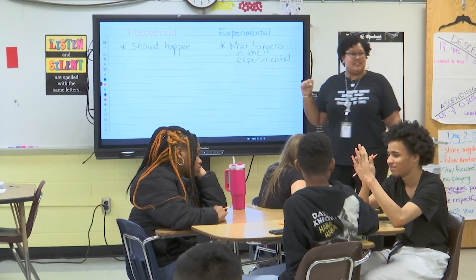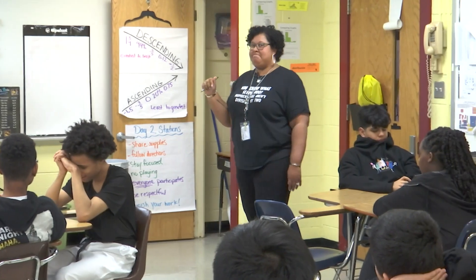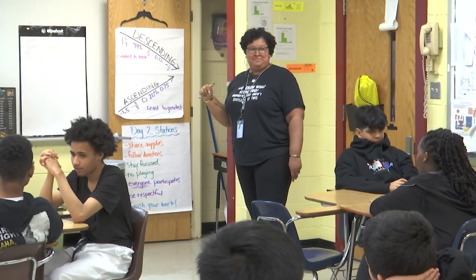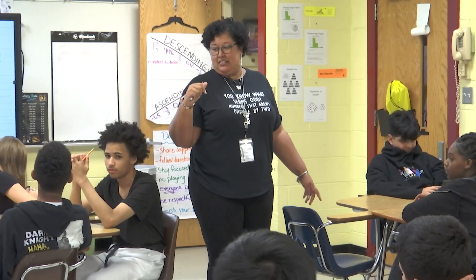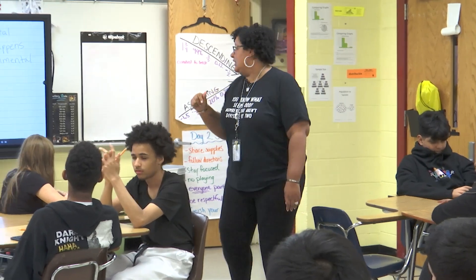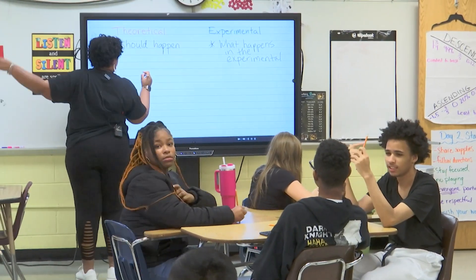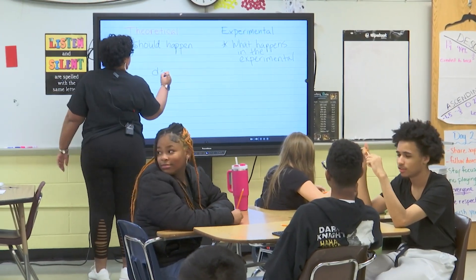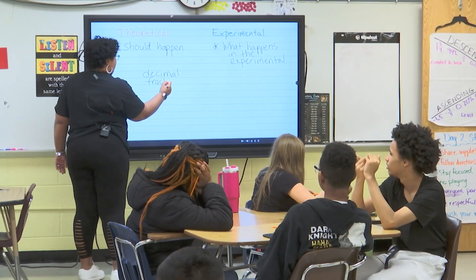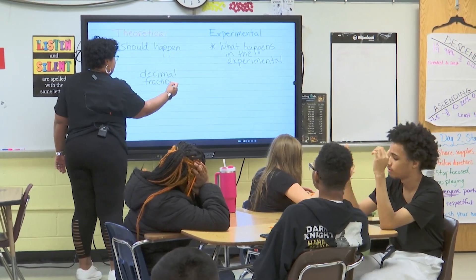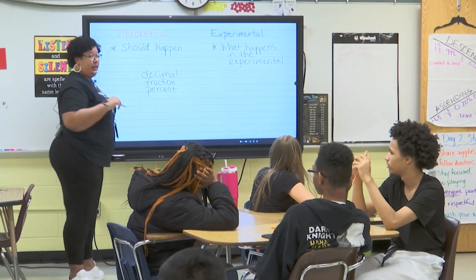What are the ways that we write our probability? What are those three ways? Nigel? There you go — decimal. How else? Percent. Very good, Delilah. What else? So for both of these we can write the probability as a decimal, as a fraction, or as a percent.